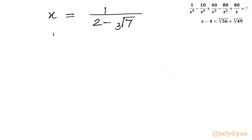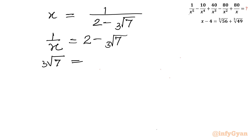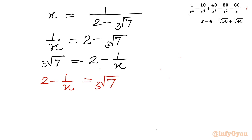Taking the reciprocal of this equation, 1 over x equals 2 minus cube root of 7. Rearranging, cube root of 7 equals 2 minus 1 over x. Now I will raise both sides to the power 5. For that I will use Pascal's triangle and binomial expansion.